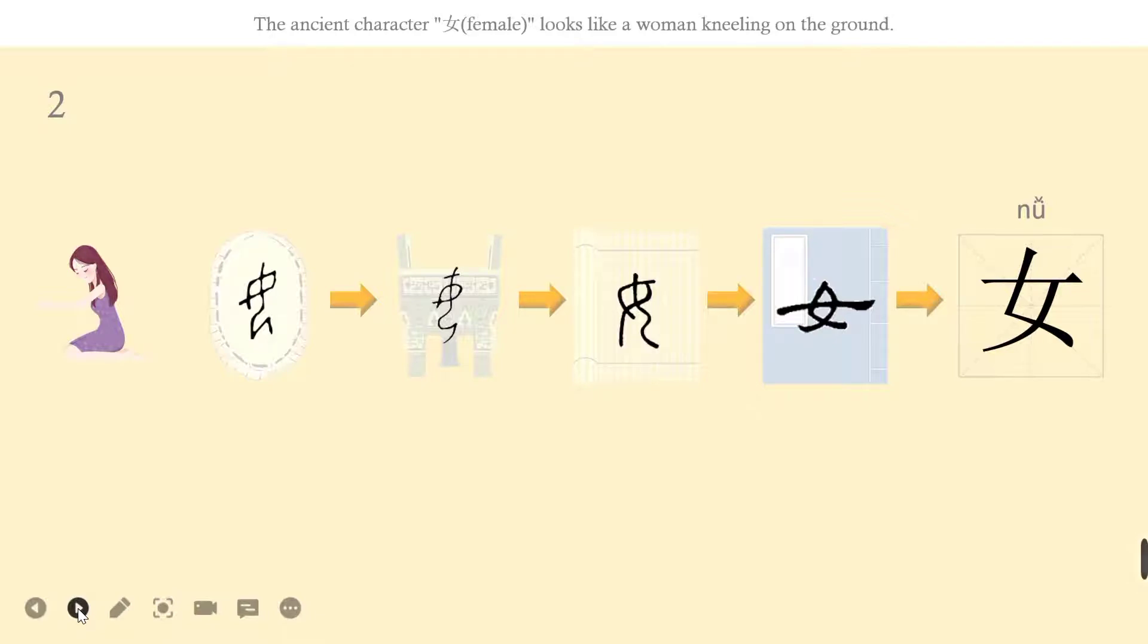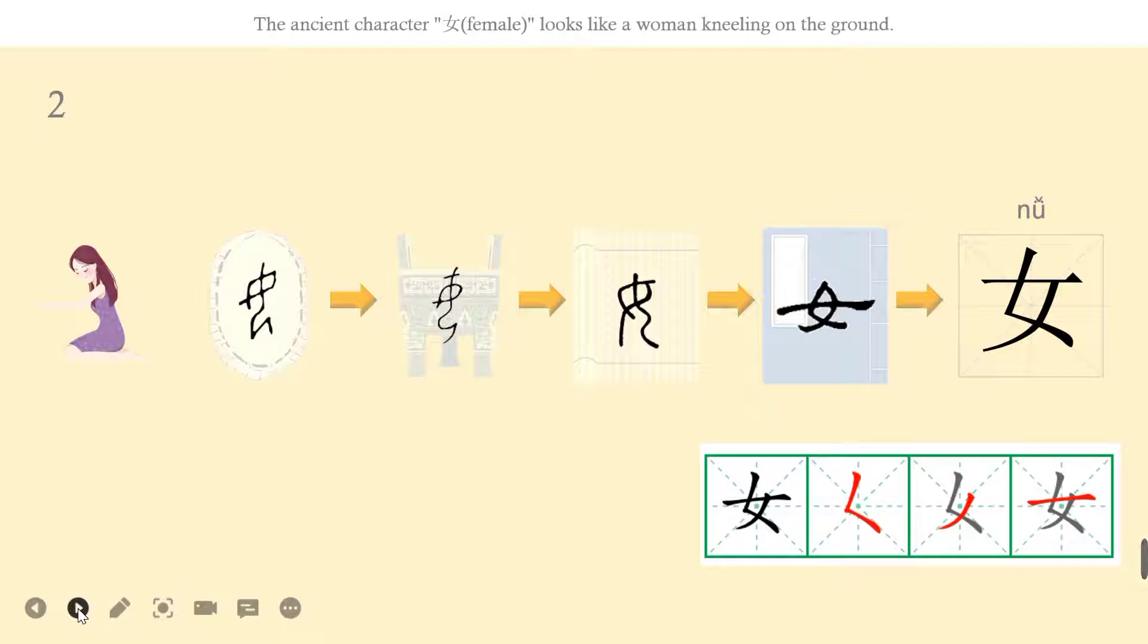Let's learn how to write. Nǚ has three strokes. The first stroke: diǎn. The second stroke: piě. The third stroke: héng.